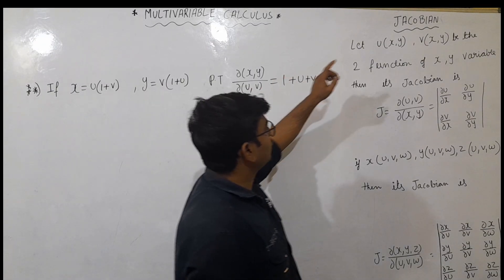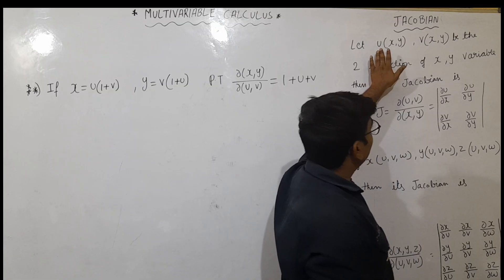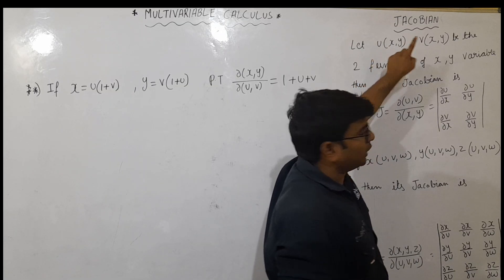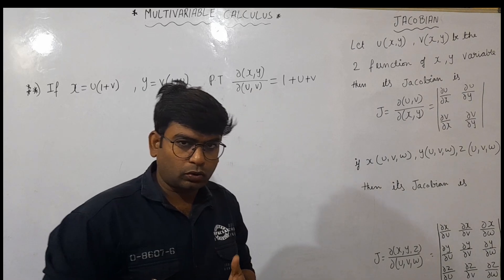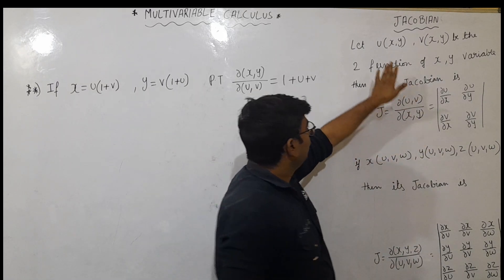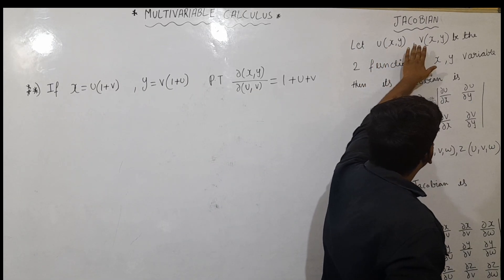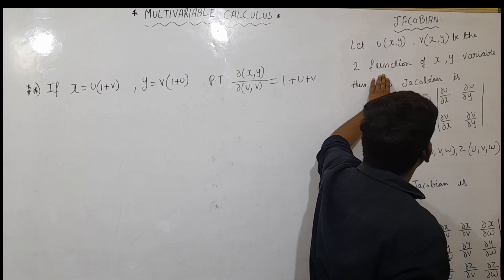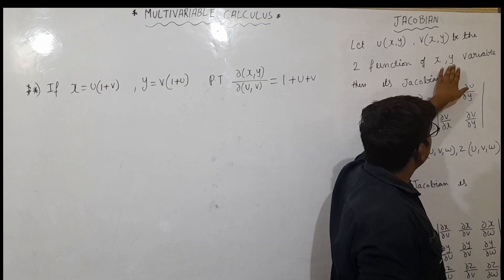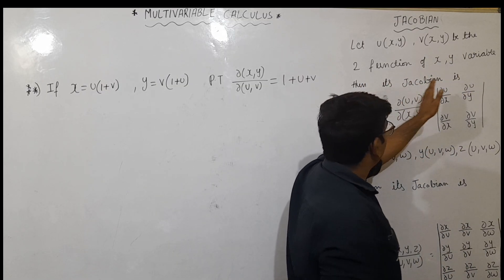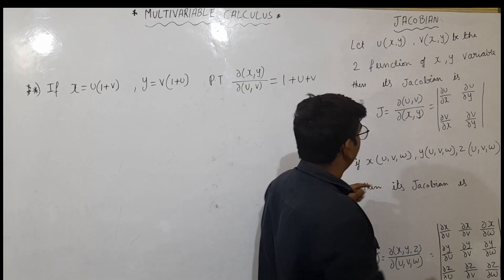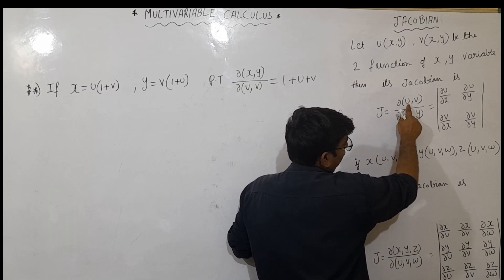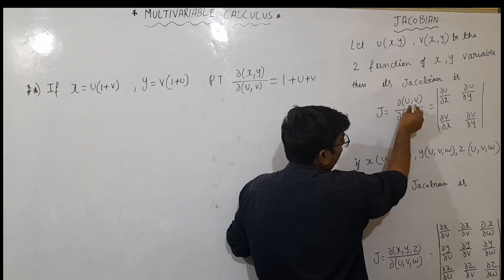Let's start with the Jacobian. Here we take u. When u is given, x is given, and u, v are given. So let's write it down. First, generally: let u of x,y and v of x,y be the two functions of x,y variables. Then the Jacobian J of uv over xy is defined.